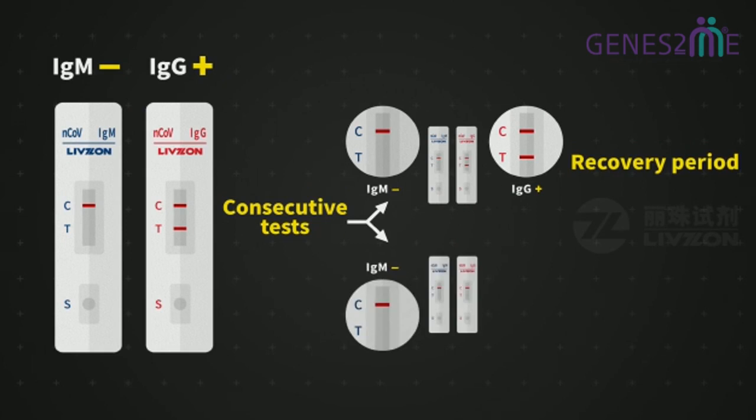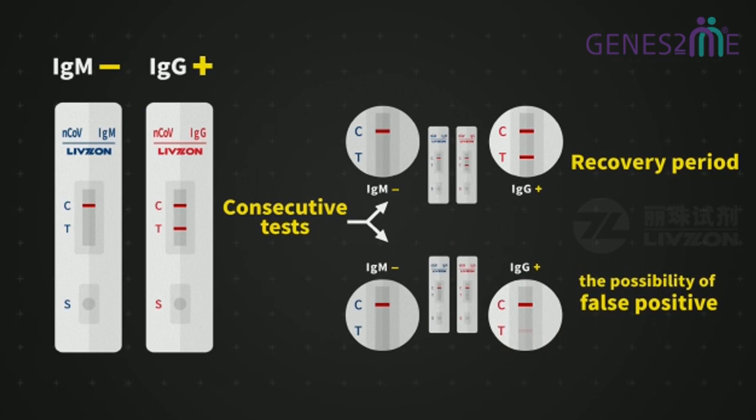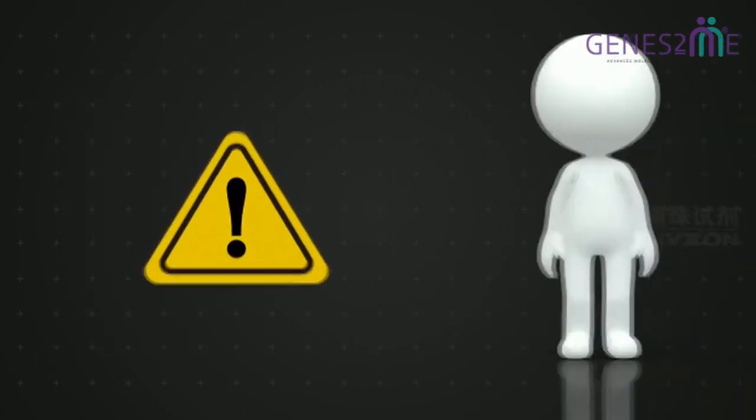However, if IgG remains to be weak positive with a consecutive testing, the possibility of false positives should be considered. One thing should be reminded again.